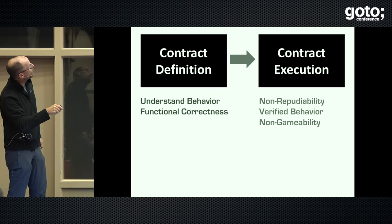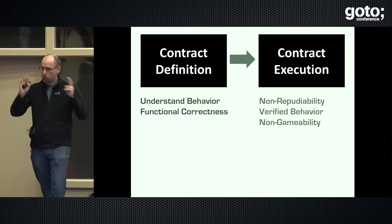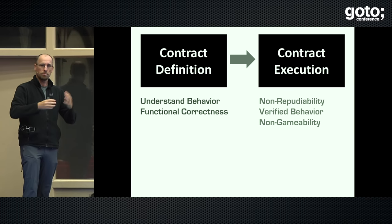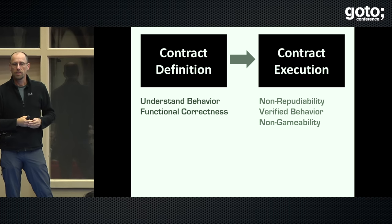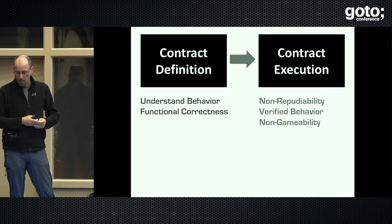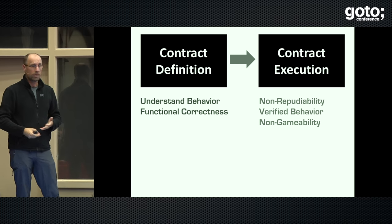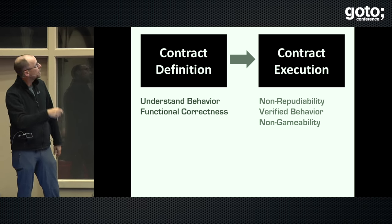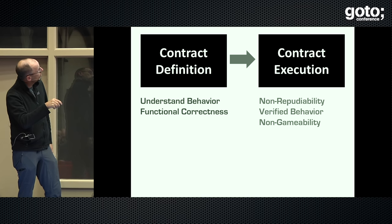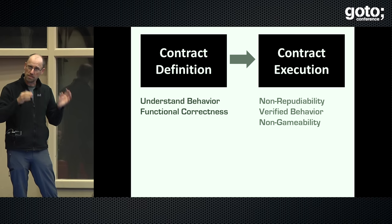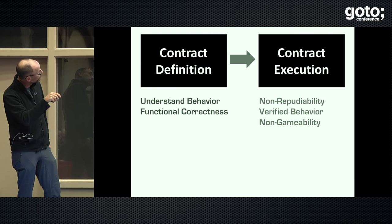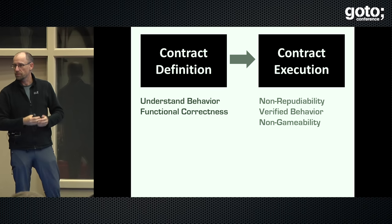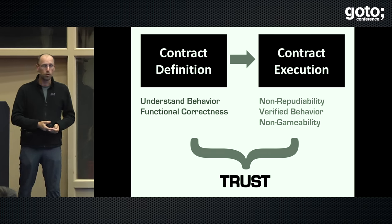Once you execute it, that's where blockchain-y kinds of things come in, where you can guarantee through crypto and agreement protocols that you can't game it. Assuming the specified behavior is correct to all parties involved, you make sure that the actual software system that runs it enforces this correctly — and you use crypto stuff to prove that you actually submitted something, paid something, whatever. Once you have these two things, then you can trust.